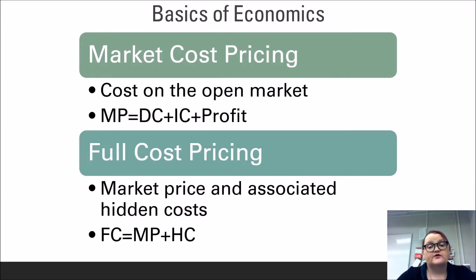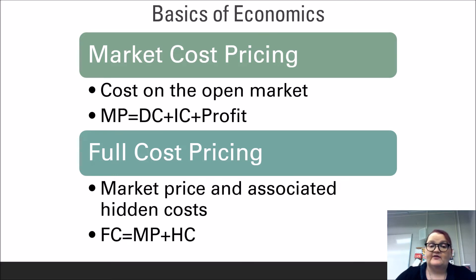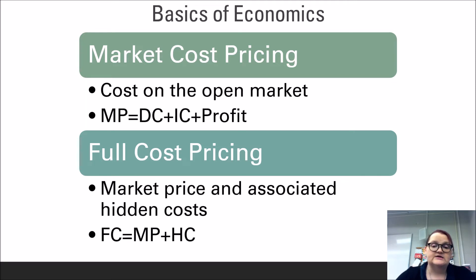Using those three types of costs, there are two pricing models used in economies to determine how much a good or service will cost a consumer. The first and most common is market cost pricing, where the sale price is determined by adding direct costs, indirect costs, and the desired profit. The other pricing model is full cost pricing — more rare, as it leads to higher sale prices which can reduce customer demand. Full cost pricing is most often associated with sustainable or environmentally friendly goods and services. In this model, the sale price is calculated by adding the market price — the sum of direct costs, indirect costs, and desired profit — to the hidden costs of the good or service.